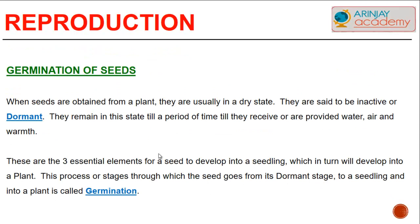Germination of seeds takes place when the seeds are provided with water, air, and warmth. Until they receive these elements, they lie dormant or are said to be inactive. Once water, air, and warmth are provided, they help the seed develop into a seedling, which in turn develops into a plant. This process — from the dormant stage to a seedling and into a plant — is called germination.